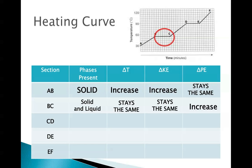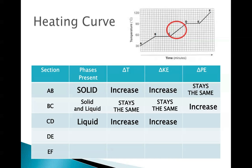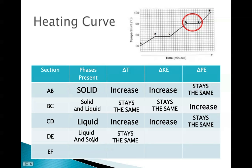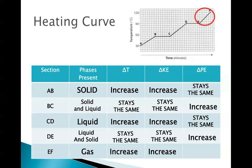We can continue on to slope CD, where we have a liquid present. Once we got to point C, the sample was completely liquid, and that starts heating up towards D, meaning temperature and kinetic energy are both increasing, but potential energy stays the same. DE looks very similar to BC on our plateau — here we have a liquid that's going to be vaporizing into gas — so temperature and kinetic energy stay the same, and potential energy increases. Finally, for EF, we have a gas present: temperature and kinetic energy increase, but potential energy stays the same.